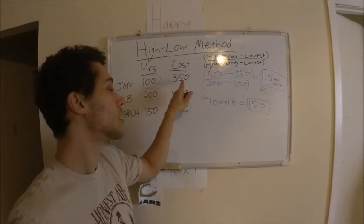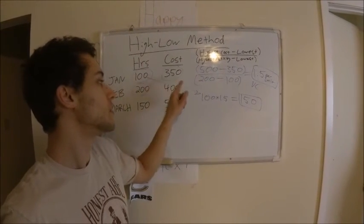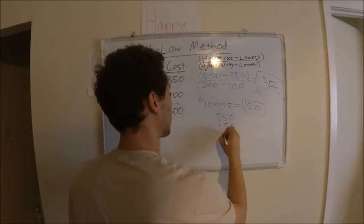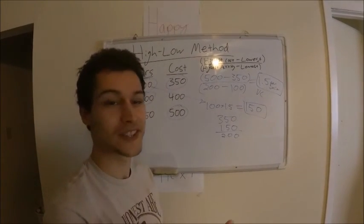And you know that your total cost was $350. So $350 minus $150, $200 has to be your fixed cost.